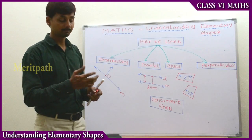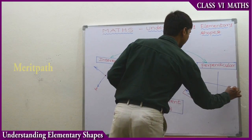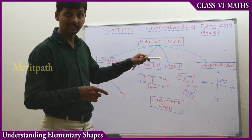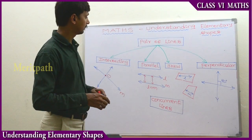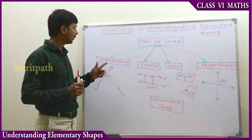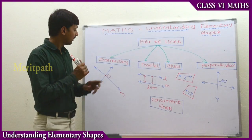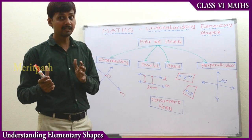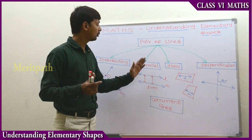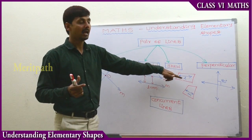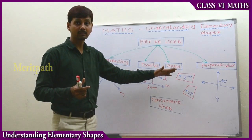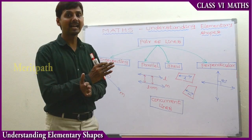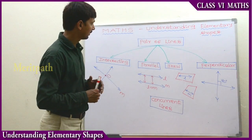Two lines intersecting at right angles are called perpendicular lines. The angle between them is 90 degrees. So when two lines meet at 90 degrees, we call them perpendicular lines. To summarize: intersecting lines meet at one common point; parallel lines do not intersect and have equal distance between them; skew lines are in two different planes and neither intersect nor are parallel; and perpendicular lines meet at 90 degrees.